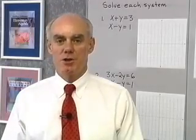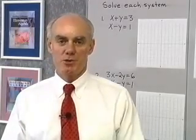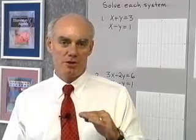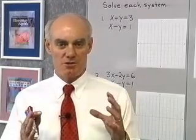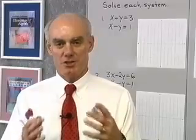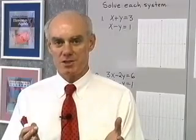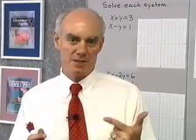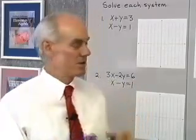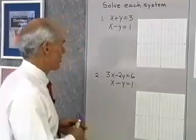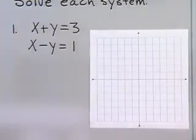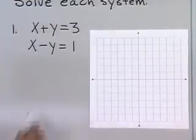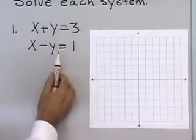A system of linear equations in two variables is two linear equations considered together. A solution set to the system is any ordered pair that satisfies both equations. We want to start our solving for systems of equations by graphing.